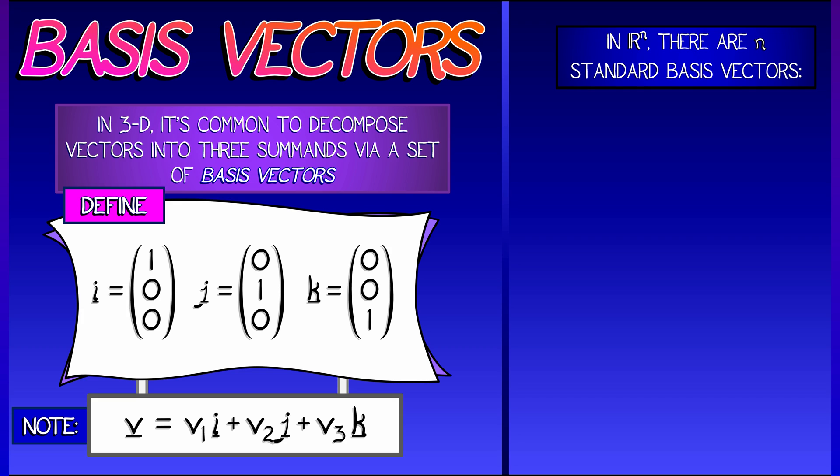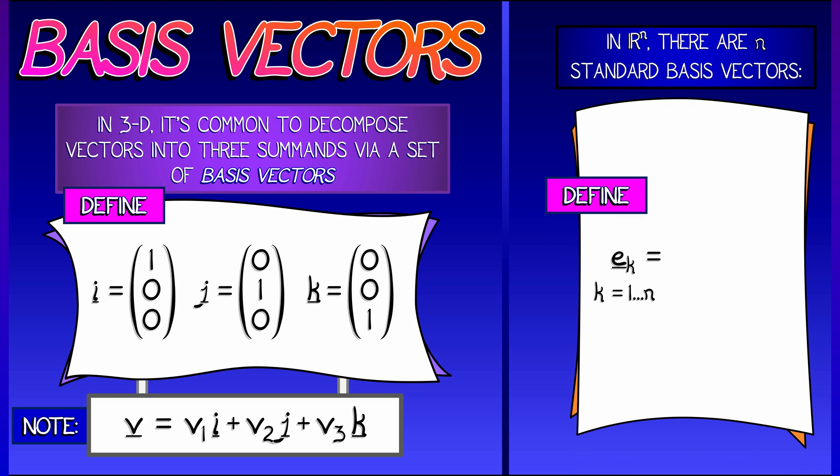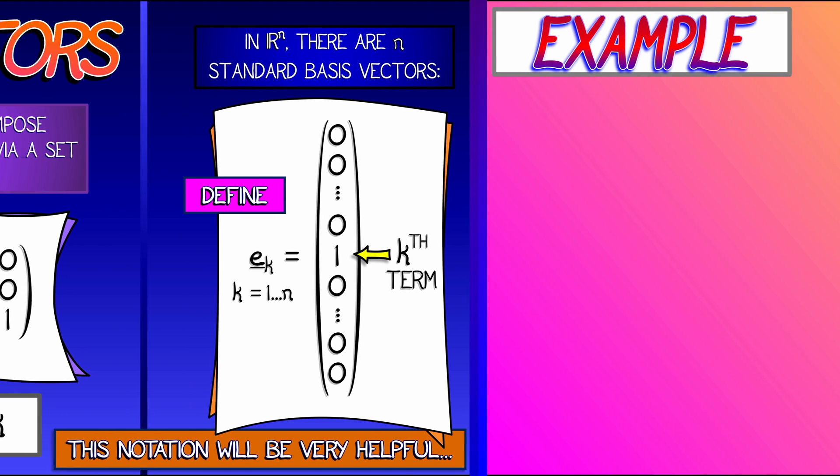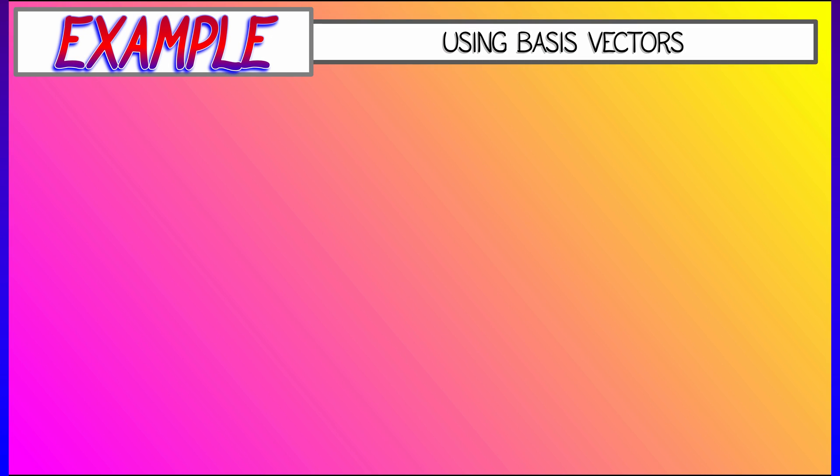Now when you move from r3 to rn, we quickly run out of letters. So what we're going to use are the n standard basis vectors denoted e sub k, where that subscript goes from 1 to n. Each e sub k has zeros in all n slots except the kth term, which is equal to exactly 1. This notation is entirely standard and very helpful to us. With a little bit of practice, you'll get it.